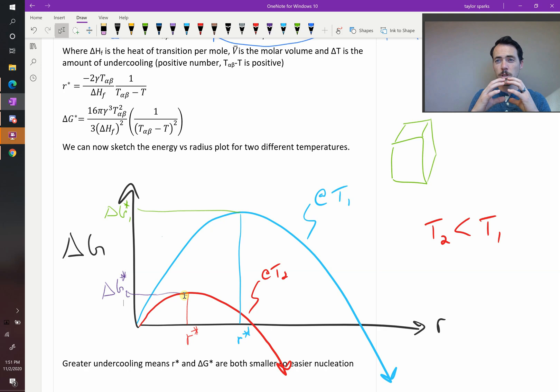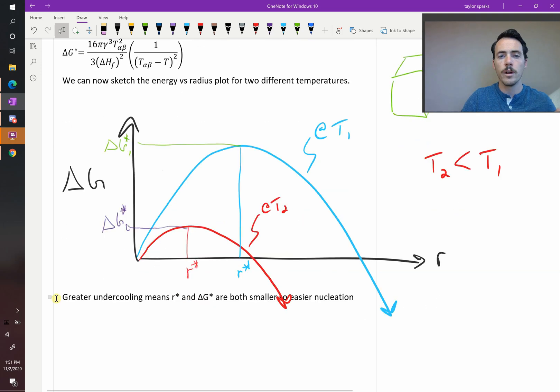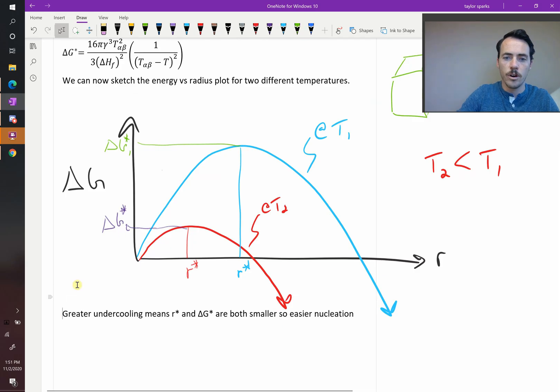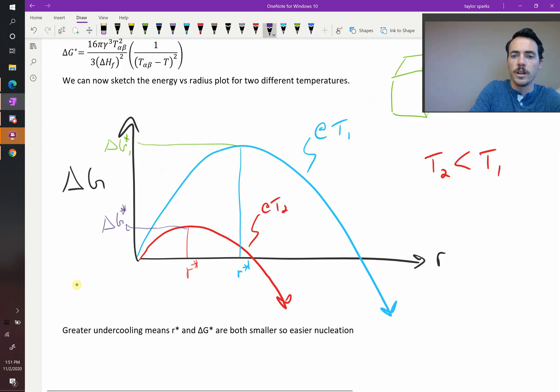That even really small nuclei are big enough that they can just keep on growing and they won't re-dissolve. Therefore, the takeaway here is that greater undercooling means that R star and delta G are both smaller and therefore you get easier nucleation as you continue to undercool something.